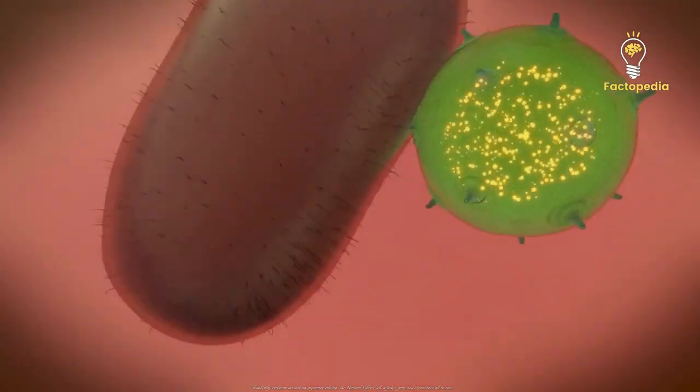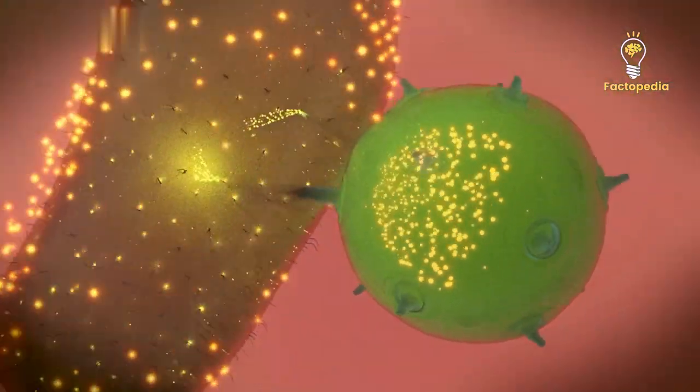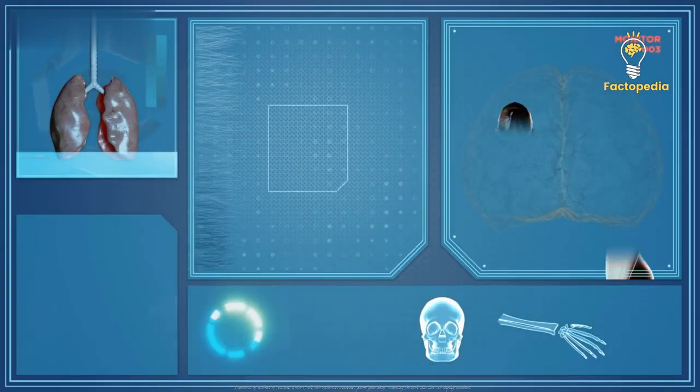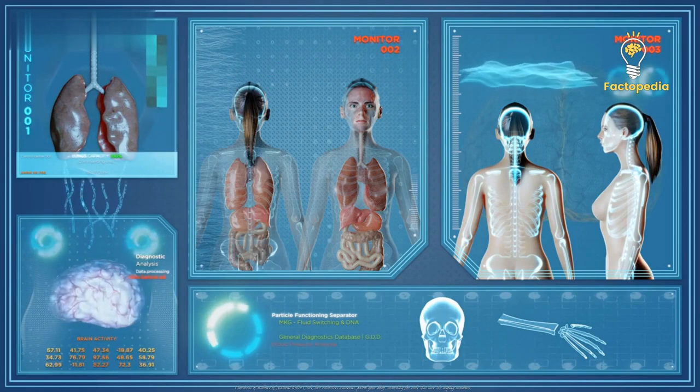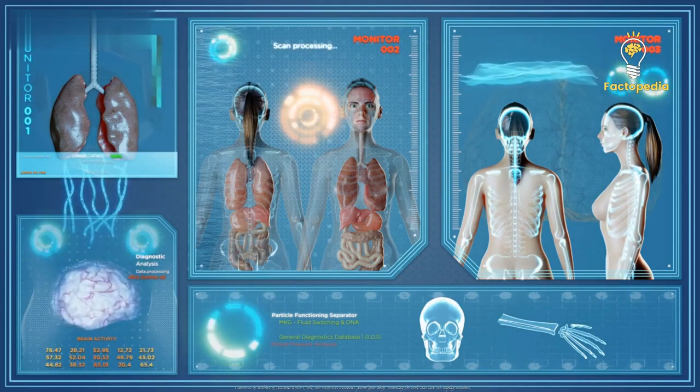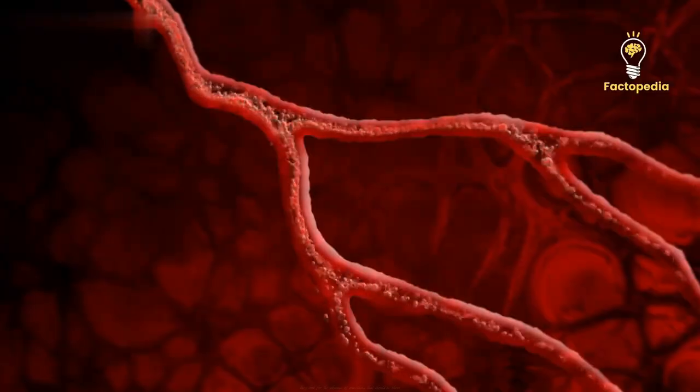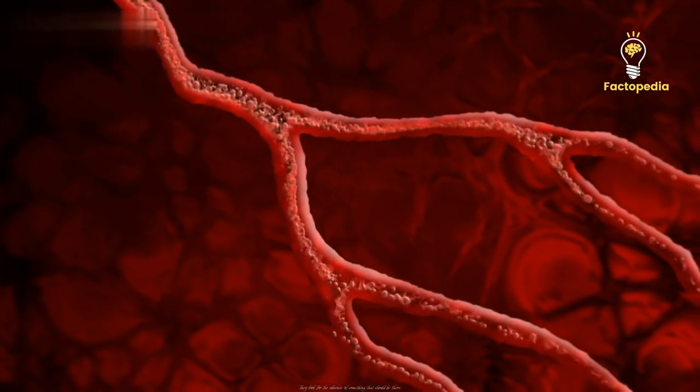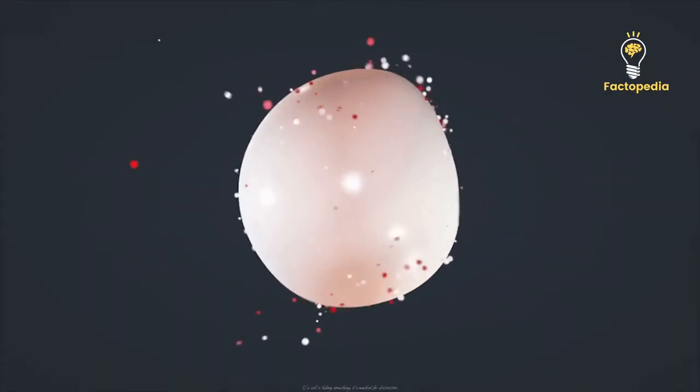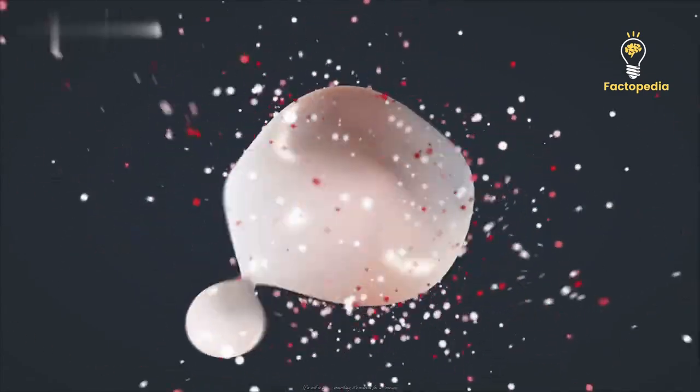Hundreds of millions of natural killer cells, like relentless assassins, patrol your body, searching for cells that lack the display windows. They look for the absence of something that should be there. If a cell is hiding something, it's marked for destruction.